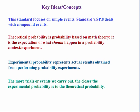This terminology isn't used in the standard, but theoretical probability is probability based on math theory. It's the expectation of what should happen in a probability context or experiment. Experimental probability represents the actual results obtained from performing probability experiments. Now this last item is important. The more trials or events we carry out, the closer the experimental probability is to the theoretical probability.